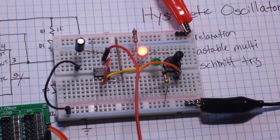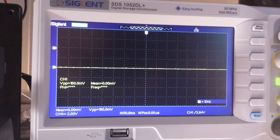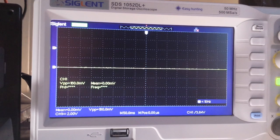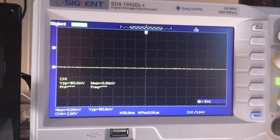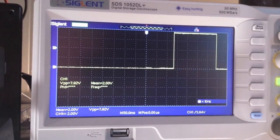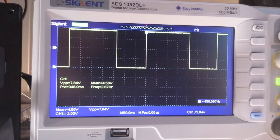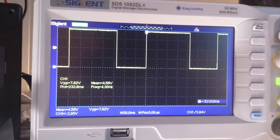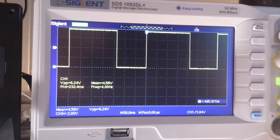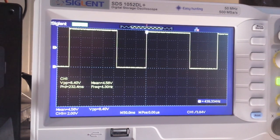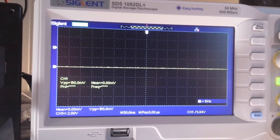What do you say we put it on the scope and have a look? Alrighty, so I'm going to probe that connection point between the two diodes. And there you go. You can see we're at a frequency of just under 3 Hertz, and you can see how our mark and our space is different.